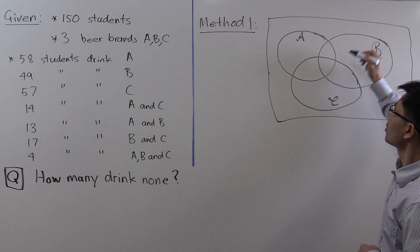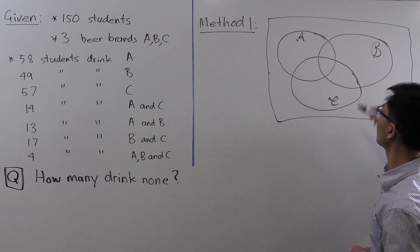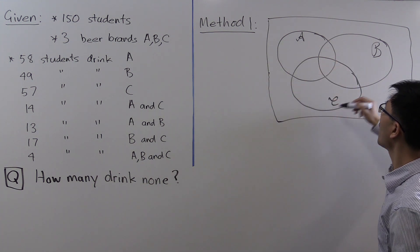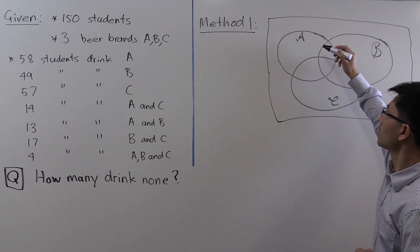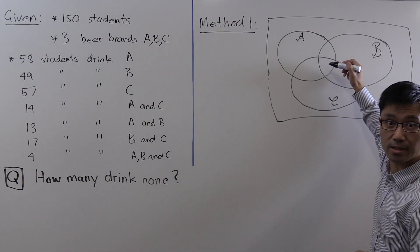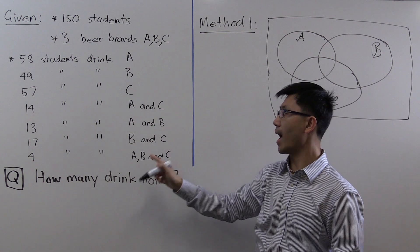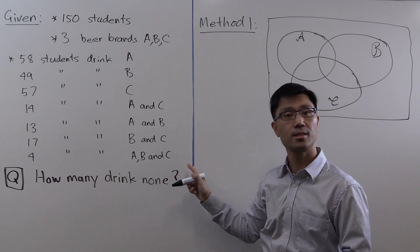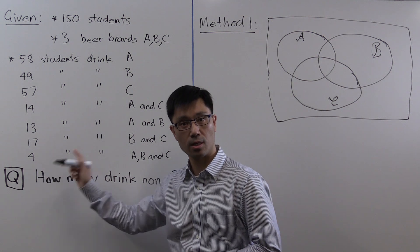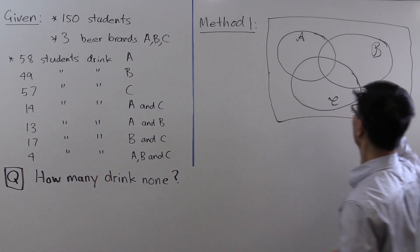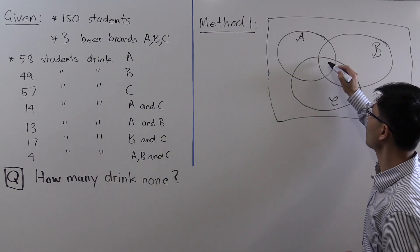Each region corresponds to certain groups of students. If you're in all three circles, that means you drink all three brands — A, B, and C. So you're one of those 4 students. We put a 4 in the center region to represent that.